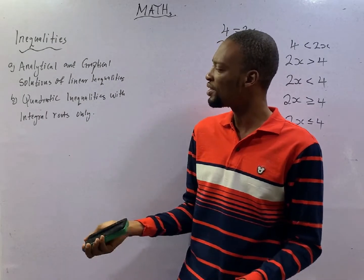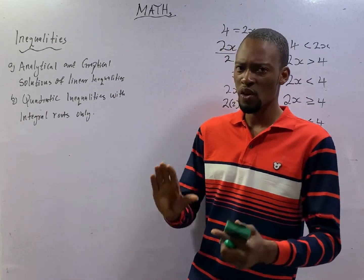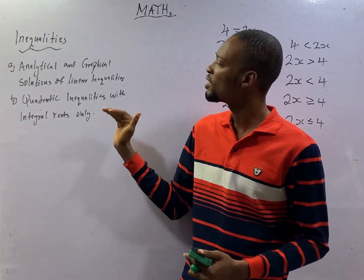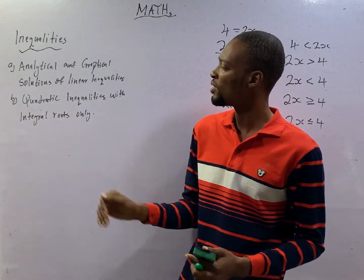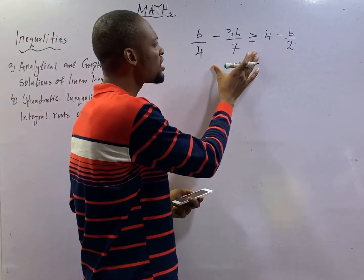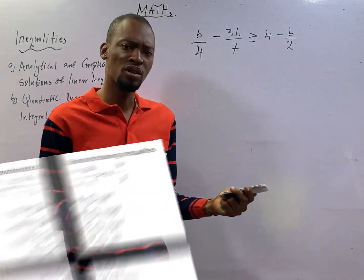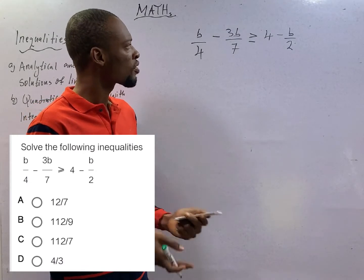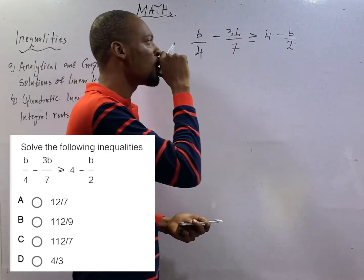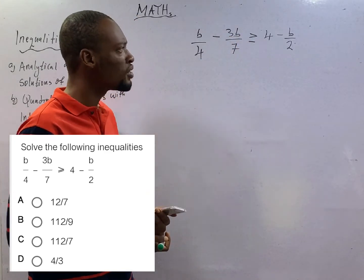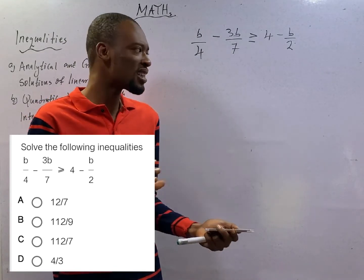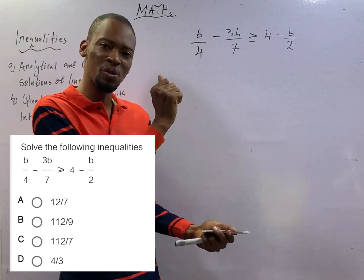In quadratic equations or inequalities, you can arrive at complex roots, but JAMB doesn't expect you to know complex numbers for inequalities — you only need to know the integral roots. Now let's take a look at this question. We are given an inequality to solve for the value of B. Ask yourself: if this were an equation, how would I solve for B? That is exactly how you solve it as an inequality.